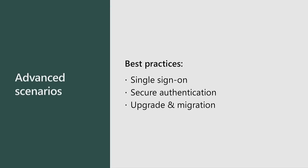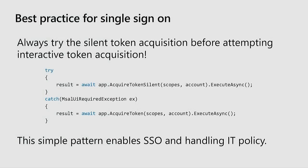Let's continue on with some best practices. First up: single sign-on. Nobody likes to see constant popups saying sign in, sign in, sign in. We've made this simple. We give you two API calls: acquire token silent and acquire token. This is the common pattern you want to use throughout your code. It not only gives you the best single sign-on experience, it also allows you to handle situations like IT policy. For example, if your IT administrator has set a policy to require multi-factor authentication when you're not in the office, even though you are signed in and try to acquire a token silently, it would fail - you would go to acquire token, get an interactive dialogue, complete the multi-factor authentication, and then get into the application.